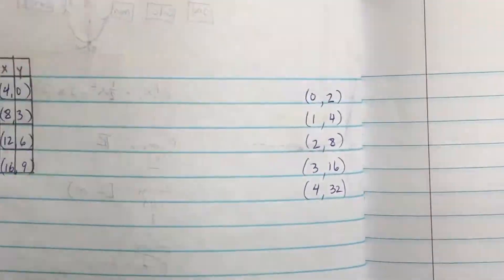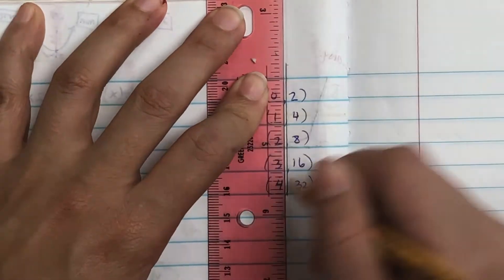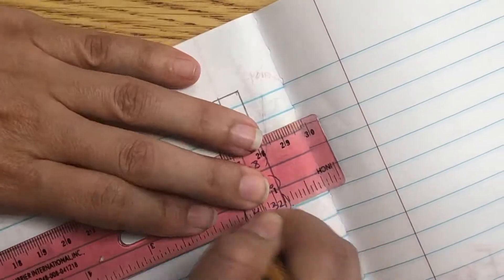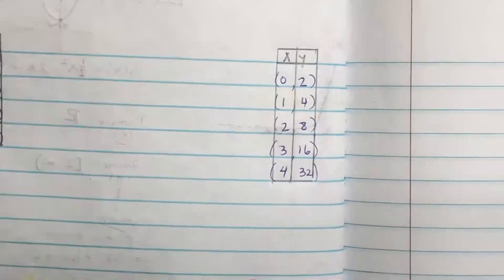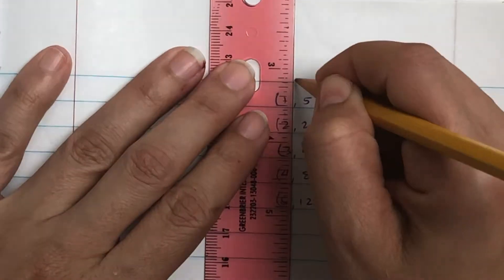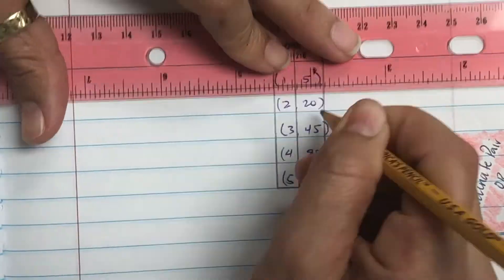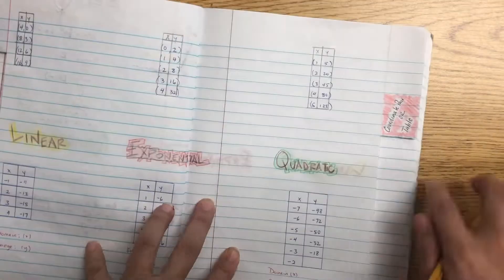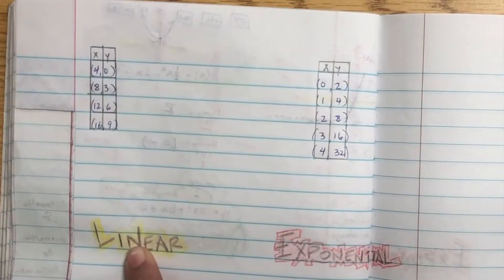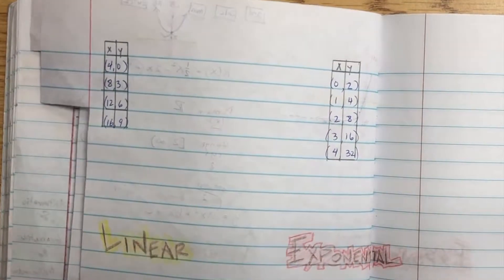So when you're given a coordinate pair, make it a table. Now usually they put them side to side, but I put them underneath each other so I could make a table. When they give you coordinate pairs, you're making a table. Once you make that, they might ask you, 'What is it? Is it linear, exponential, or quadratic?'